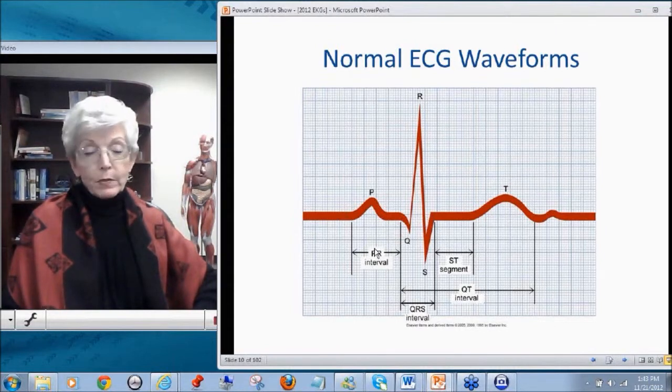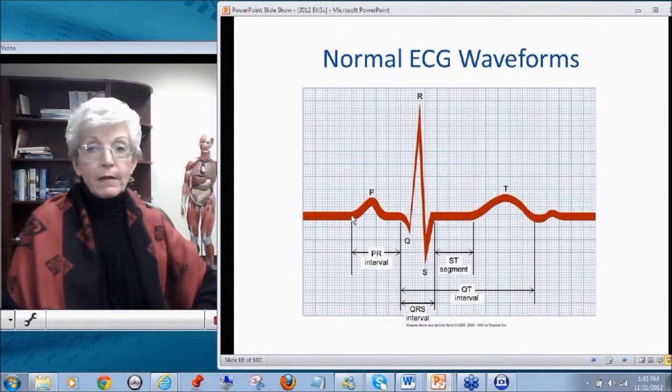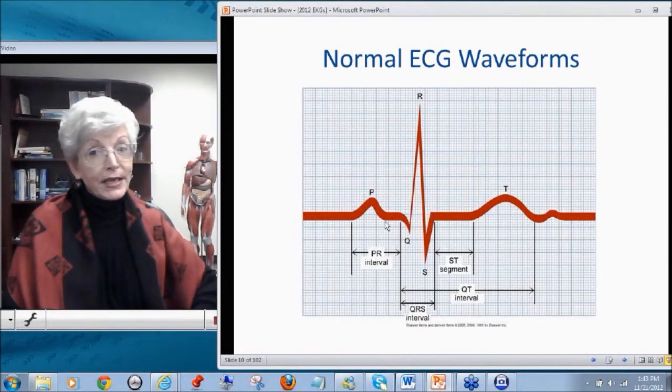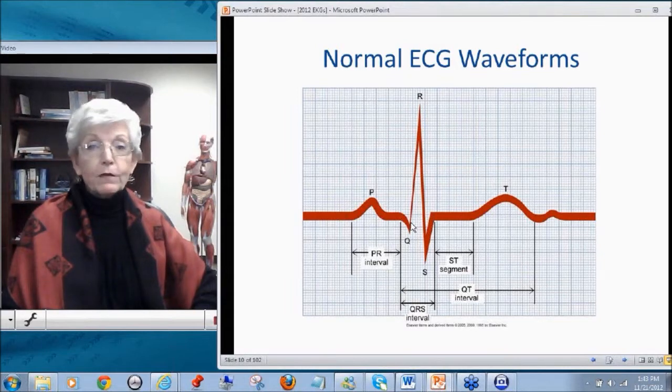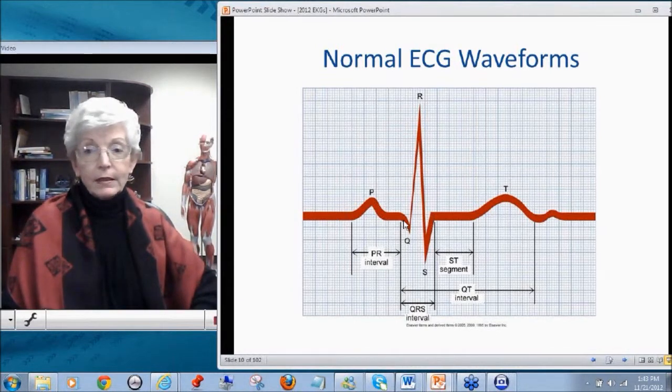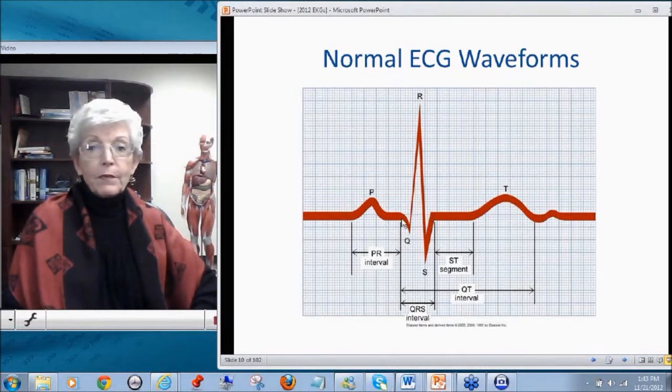We make measurements of timeframes that are important for you to recall. From the beginning of the P to the beginning of the QRS, we call this the PR, not the TQ, but we call this the PR interval. So the timing between the beginning of the P to the beginning of the QRS complex is the PR interval. And then the time from the beginning of the Q to the end of the S, the QRS, this is called the QRS interval.